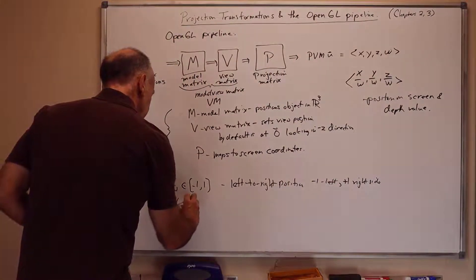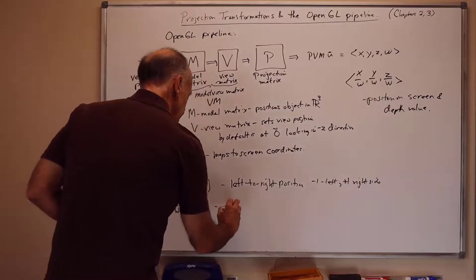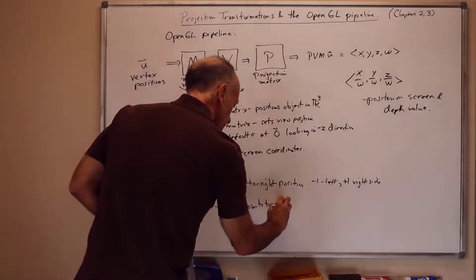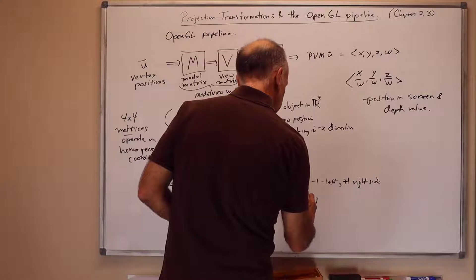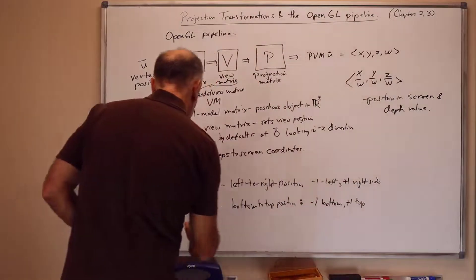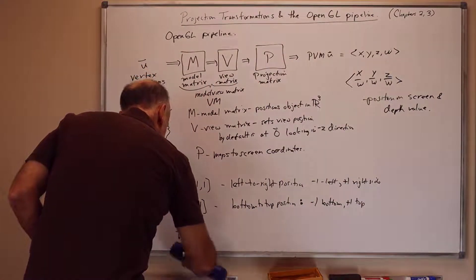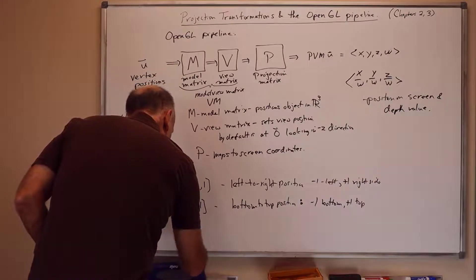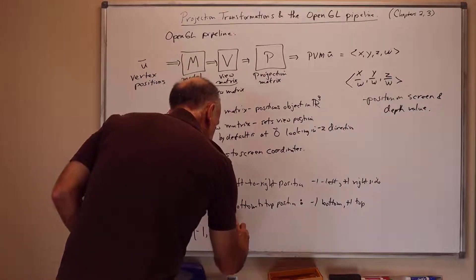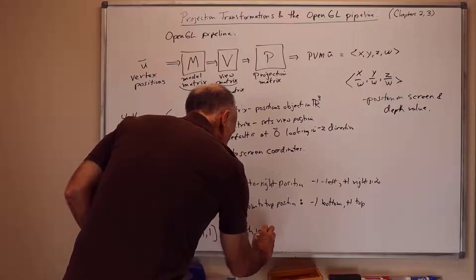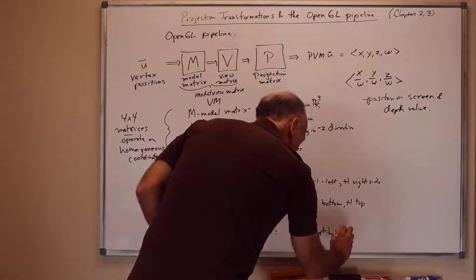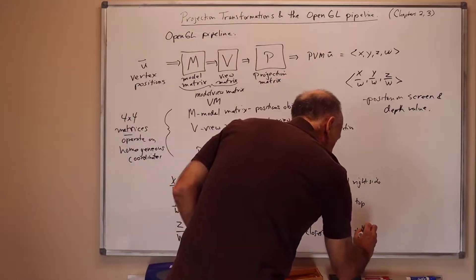Likewise, y over w is in the interval minus 1 to 1, and this is the bottom to top position. And z over w is again in the interval minus 1 to 1, and this is the depth value. And here minus 1 is closest to the viewer, and plus 1 is farthest from the viewer.